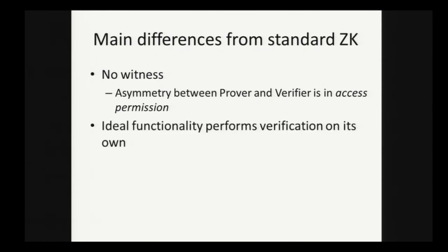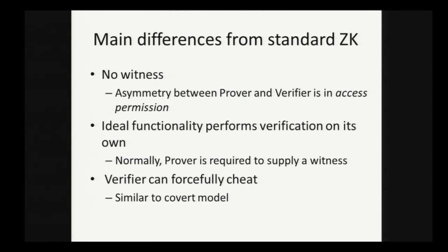What are some of the main differences from the standard definition of zero knowledge? One, there's no witness, which captures the fact that in zero knowledge proofs for physical properties, the asymmetry between the prover and the verifier is an access permission to the physical object and to the measurements that can be applied to the physical object. The other thing is the ideal functionality is able to perform the verification on its own. Normally the prover is required to supply a witness, and we can't have the ideal functionality perform the verification on its own unless it's super polynomial. Finally, the verifier can always forcefully cheat in a physical scenario.